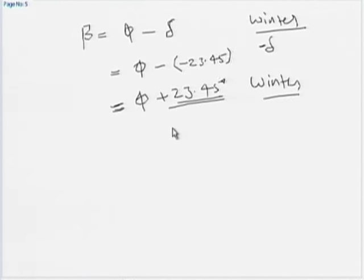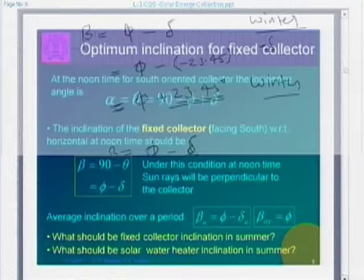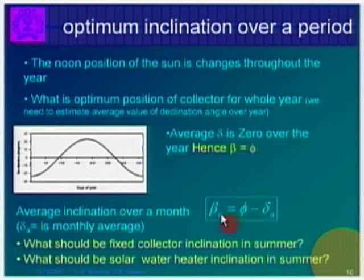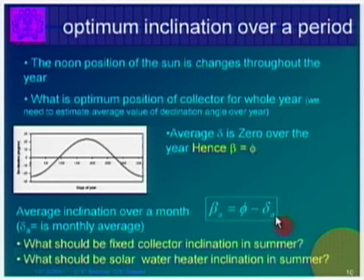If you are ready to change the angle every month, you should take the average monthly value of delta and that average value will change. To summarize: average delta over a year is 0, so β = φ. But for monthly optimization, β = φ ± δ — where delta already takes care of the plus and minus sign — depending on when you want to maximize collection.